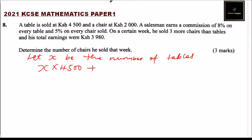Then you add the commission the salesman got from chairs. The number of chairs were 3 more, so it is x + 3. You multiply by 2,000 and he was getting a commission of 5%, so it is 0.05 or 5%. This equals the amount that he earned, that is 3,980. So we can now work on this.